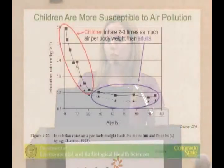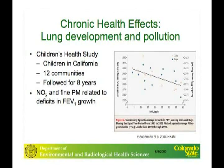When talking about the health effects of air pollution, we're always concerned about more susceptible populations. One population we think is highly susceptible is children, for several reasons. Children inhale much more air per body weight than adults do — they have a higher respiratory rate and smaller lungs, so the net effect is greater air intake per body weight. Children are also outside more, playing where air pollution levels can be higher. Additionally, children have developing organ systems; the lungs can develop until age 18 or 21, so exposure during these developmental periods is of great concern. One study from a California group was looking at these long-term health effects in children.